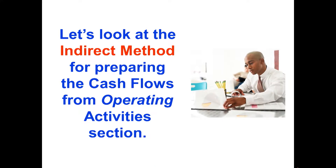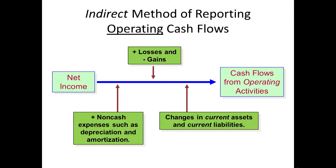Let's look at the indirect method for preparing cash flows from operating activities. We're going to go to this illustration right here — this is going to be our guide. We're going to start with our net income, do some things to it, and change that number into what is called cash flows from operating activities.